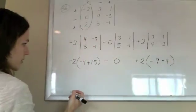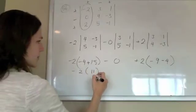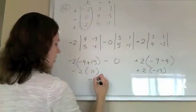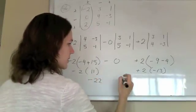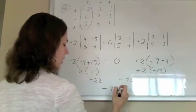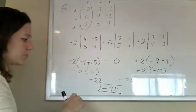So, now I'm just doing this, so this is negative 2 times 11, plus 2 times negative 13, so that's negative 22, minus 26, so I get a negative 48, which is hopefully what I got last time. Excellent.